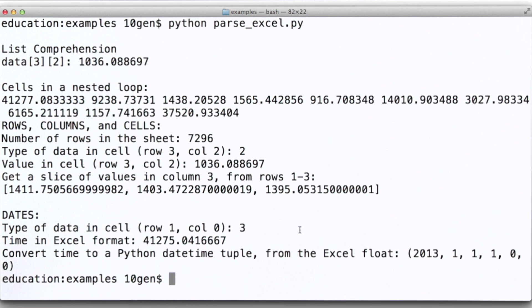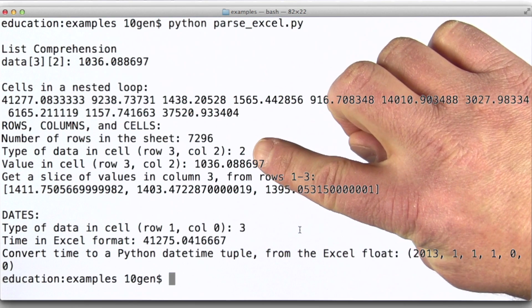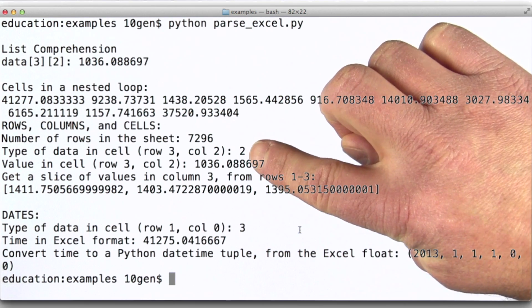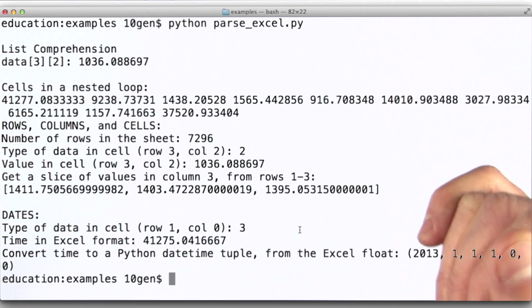And then number of rows in this sheet happens to be more than 7200. Now note here that the type of data in cell two is specified as two. You can look up in the xlrd documentation exactly what all of these different type identifiers reference. In this case, it's a floating point number.